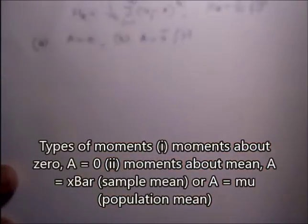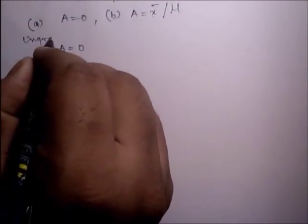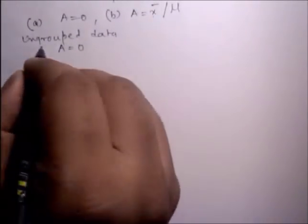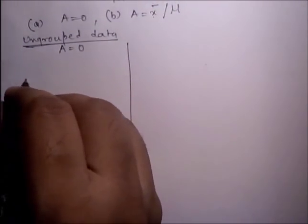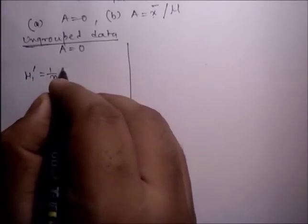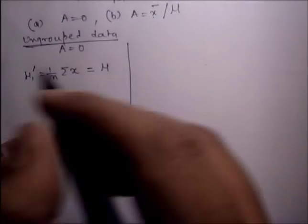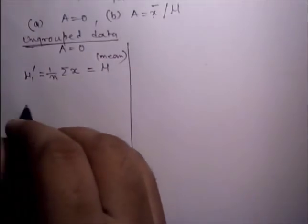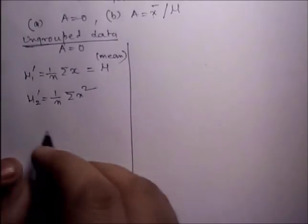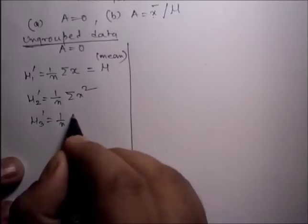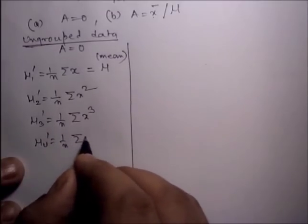For ungrouped data, the moments about 0 are as follows: the first moment mu'_1 = (1/n) summation of x; the second moment = (1/n) summation of x squared; the third moment = (1/n) summation of x cubed; and the fourth moment = (1/n) summation of x to the power 4.